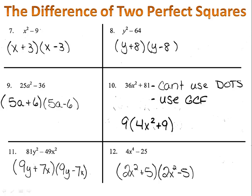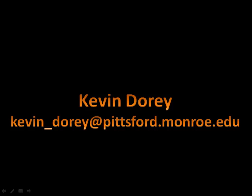11, 9y plus 7x, 9y minus 7x. And the answer to number 12, 2x squared plus 5, 2x squared minus 5. And that's everything you need to know about factoring the difference of two perfect squares.